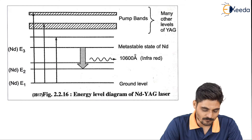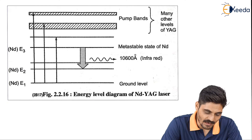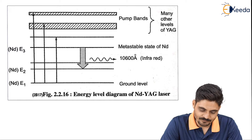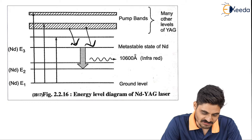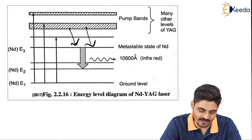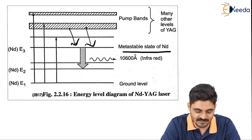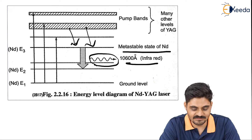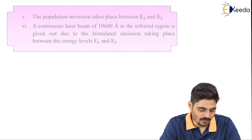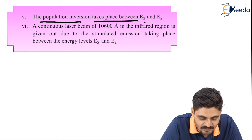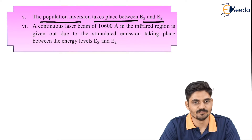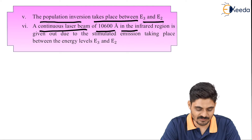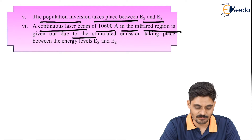There is an absorption-type transition from E1 to higher energy levels such as E5, E6, and from there they have spontaneous transitions down to E3. Hence E3 acts as the metastable state. From the metastable state, there is a lasing transition which produces 10600 Å strong infrared radiation. Population inversion takes place between E3 and E2 — E3 has a higher population of atoms than E2 — and a continuous laser beam of 10600 Å in the infrared region is given out due to stimulated emissions from E3 to E2.